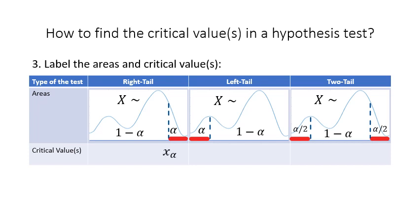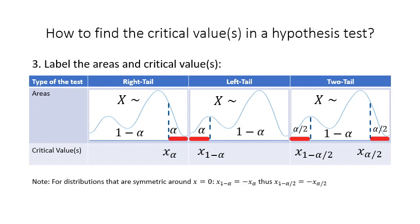Using alpha notation, we label the critical values as follows. In a right-tail test the critical value is x sub alpha. In a left-tail test the critical value is x sub 1 minus alpha. In a two-tail test, the right critical value is x sub alpha over two, and the left critical value is x sub 1 minus alpha over two, because the area to the right of that value is 1 minus alpha over two. For symmetric distributions such as Z and T, the left critical value can also be expressed as the opposite of the corresponding right critical value.